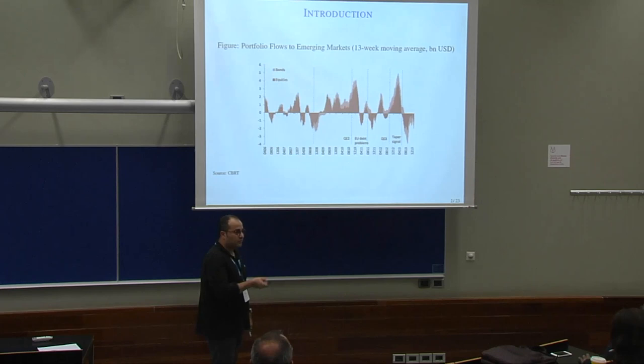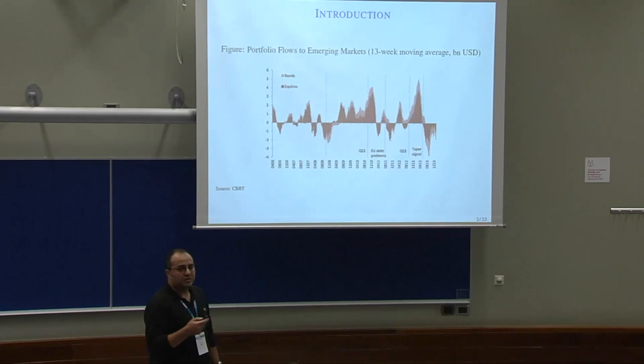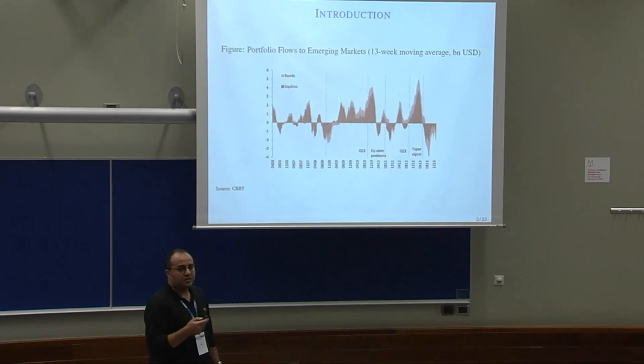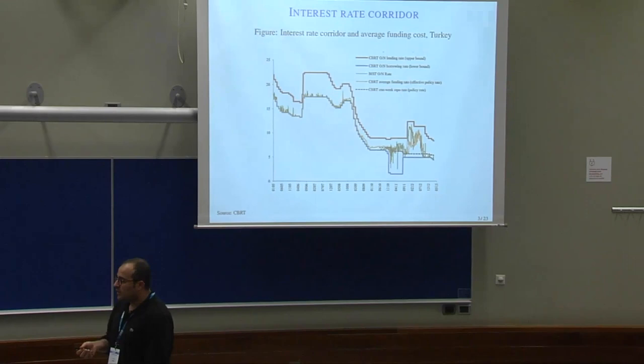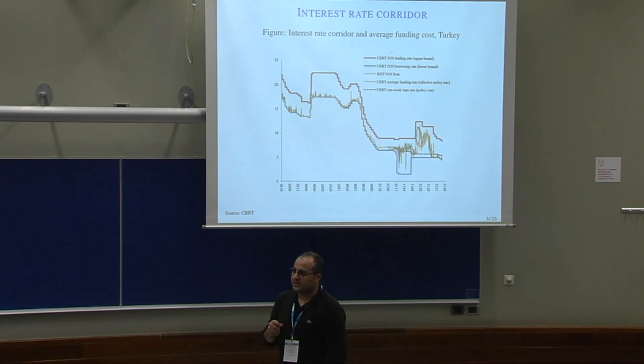After expansionary policy, there is an inflow of portfolio flows into emerging markets. When there were eurozone sovereign debt problems, we see an outflow correlated with risk in emerging markets. With the third round of quantitative easing, there is an inflow. With Bernanke's taper signal, there is also an outflow. This creates additional problems for the conduct of monetary policy in emerging markets, especially due to pressure on inflation and exchange rates.